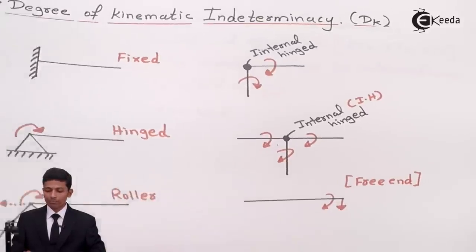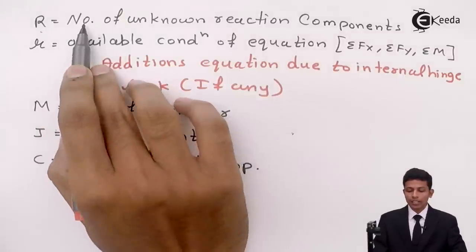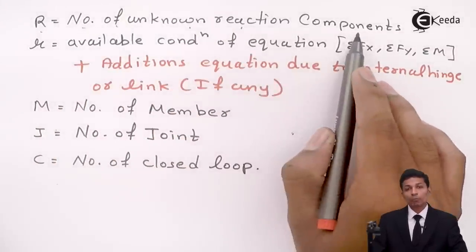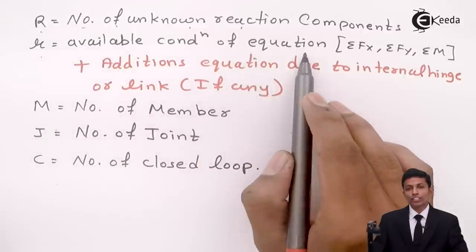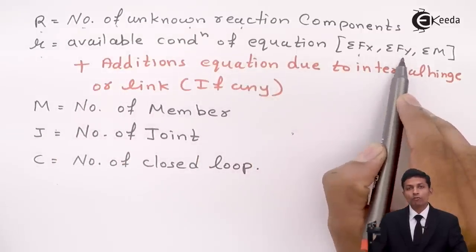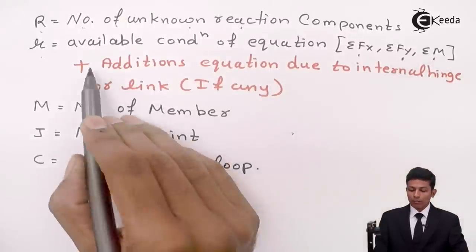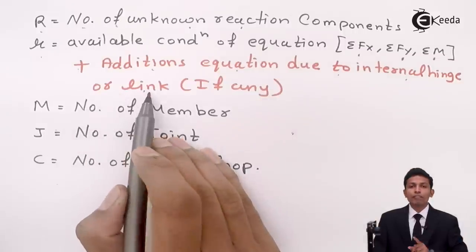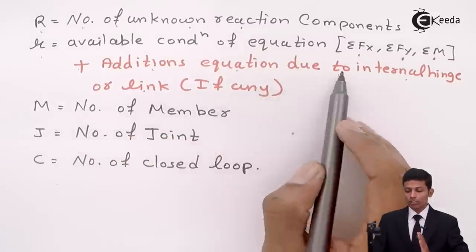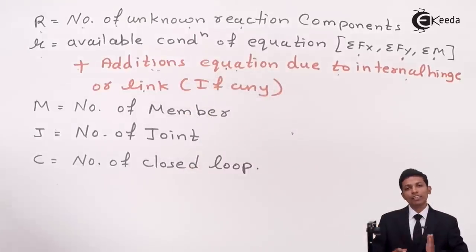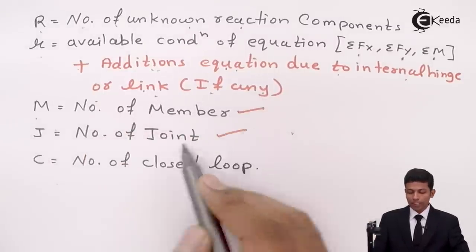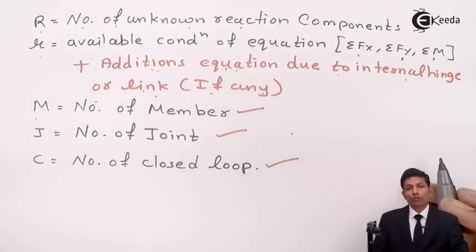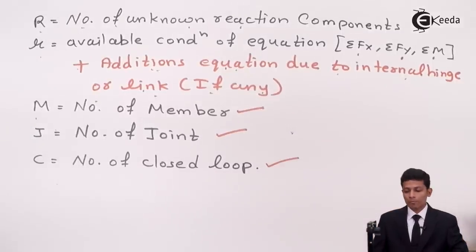Now the full forms: r is number of unknown reaction components. The 3 represents the available conditions of equilibrium — summation Fx = 0, summation Fy = 0, and moment = 0 — plus any additional equations due to internal hinges or links. m is number of members, j is number of joints, and c is number of closed loops. We will understand these better through problems. Don't forget to subscribe to the IGDA channel and share with your friends.